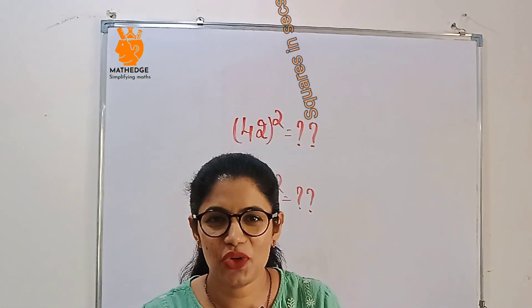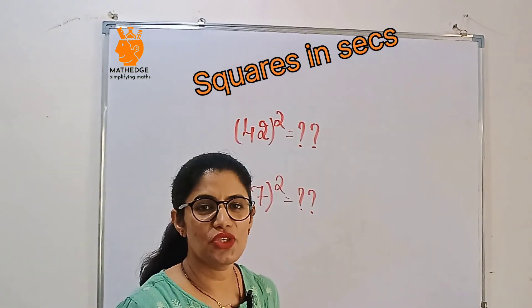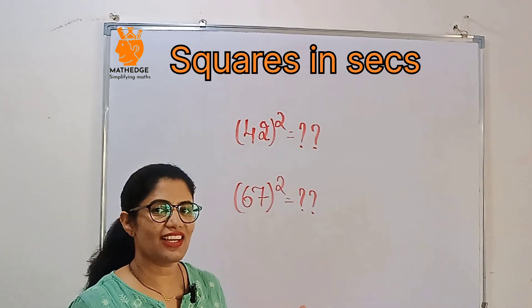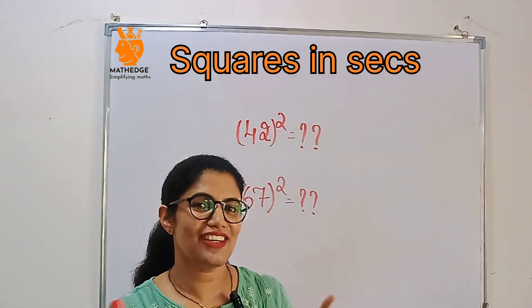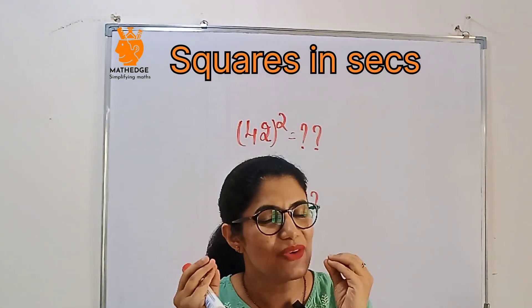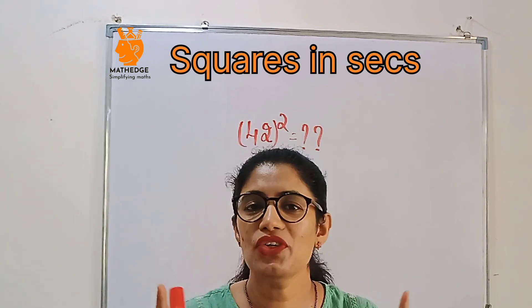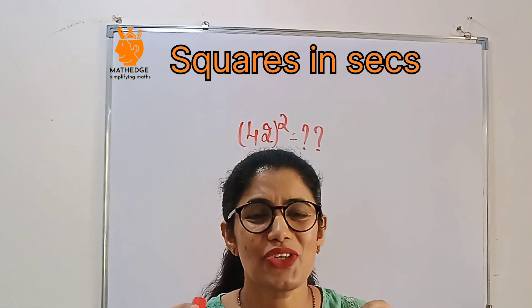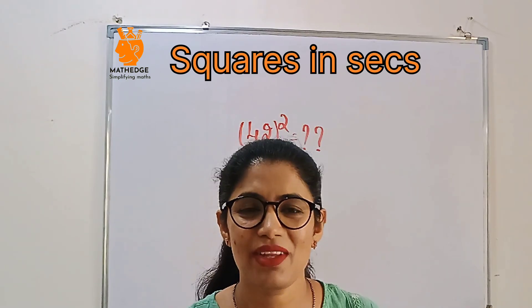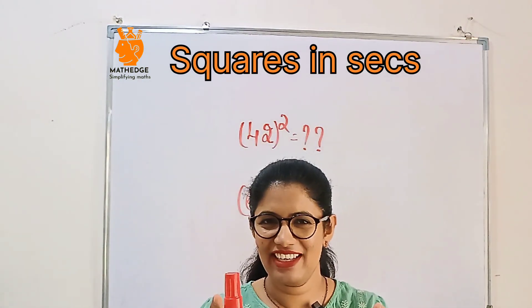Hey everyone, quick challenge for you. Can you do the squares of 42 and 67 in just a second, without using a calculator? Sounds crazy right? Yes, it will be crazy. Today I'm going to explain a new Vedic math trick to square numbers in just a second. So it's going to be quick and fun.